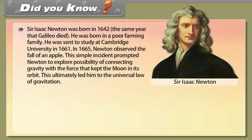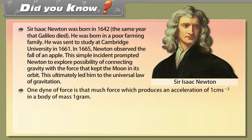Did you know? Sir Isaac Newton was born in 1642, the same year that Galileo died. He was born into a poor farming family and was sent to study at Cambridge University in 1661. In 1665, Newton observed the fall of an apple, which prompted him to explore the possibility of connecting gravity with the force that kept the moon in its orbit, ultimately leading to the universal law of gravitation.